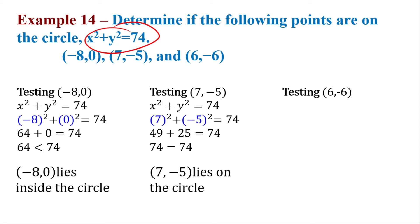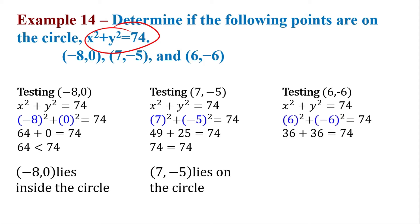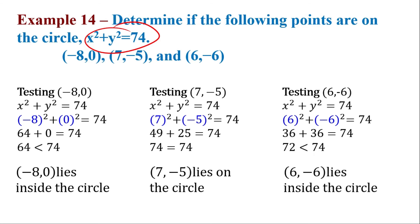For 6 comma negative 6, let's substitute it. 6 squared is 36, negative 6 squared is 36 as well. 36 plus 36 is 72. 72 is less than 74. Therefore, this point lies inside the circle.